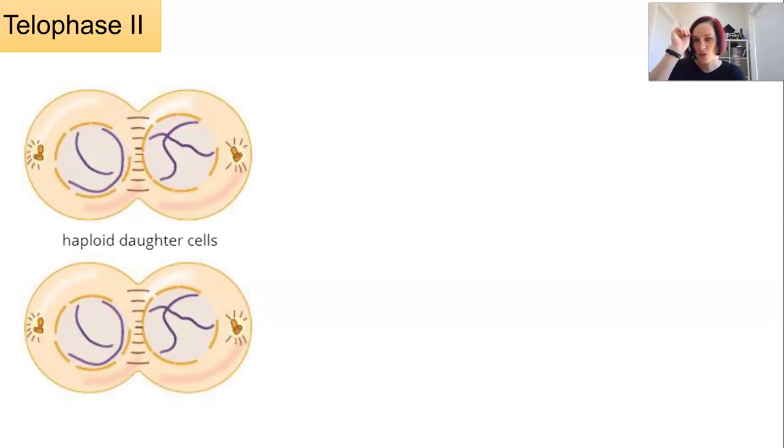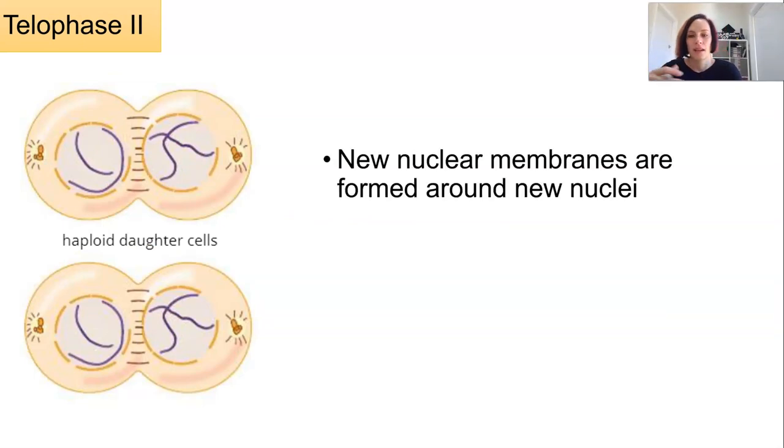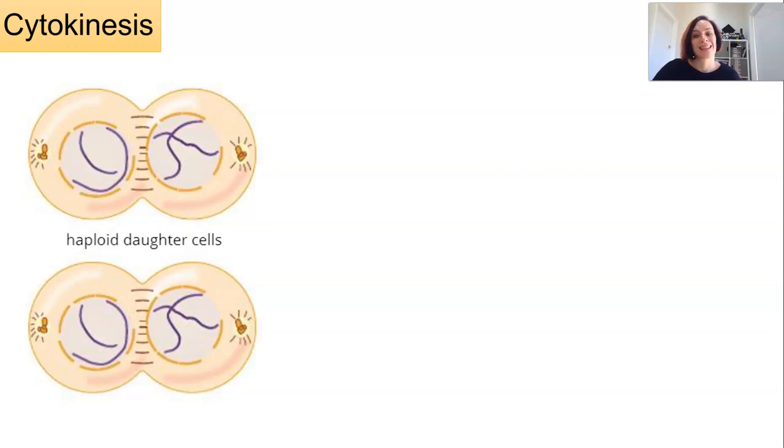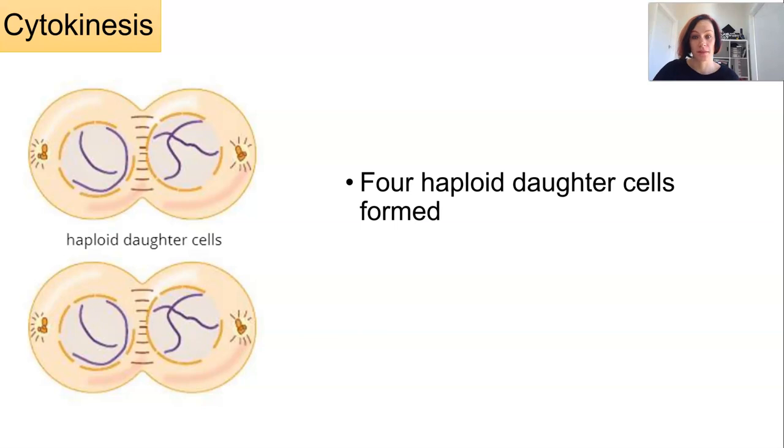Now telophase 2 occurs across both of these dividing cells. The nuclear membranes now form around the four new nuclei ready for the final division and the cytoplasm is then split and the cell membrane will close up around the four daughter cells.